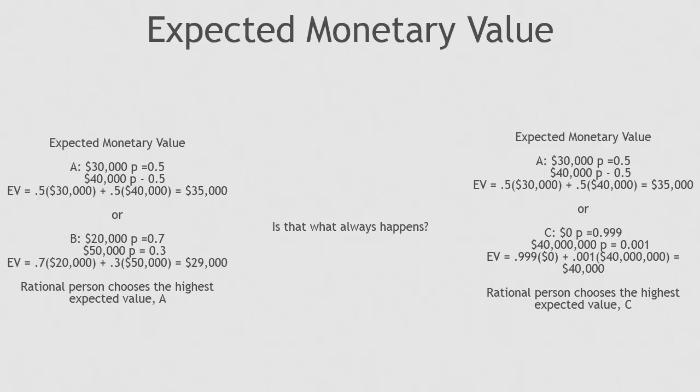Consider this situation where instead of a choice between actions A and B, the choice is between A and C. Even though C has the higher expected value, many people would be expected to choose action A.